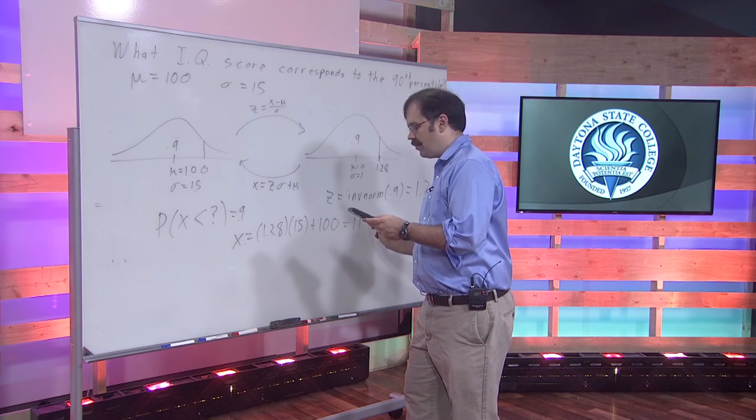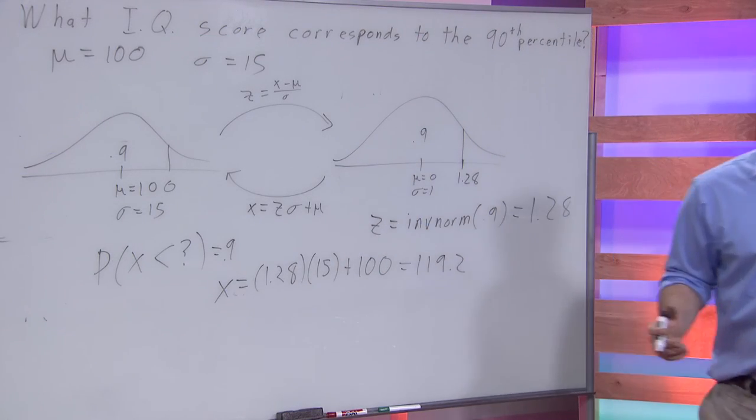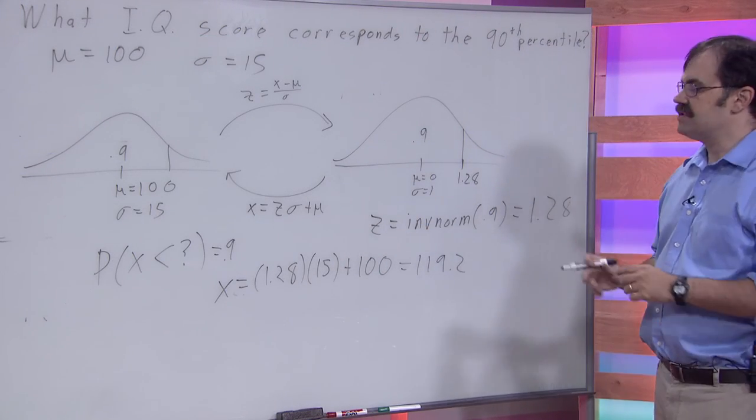So, an IQ score of 119.2 would be the 90th percentile.